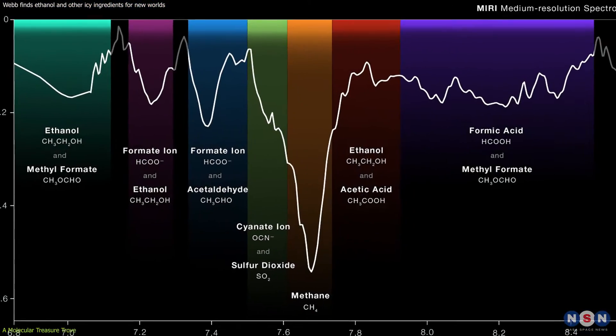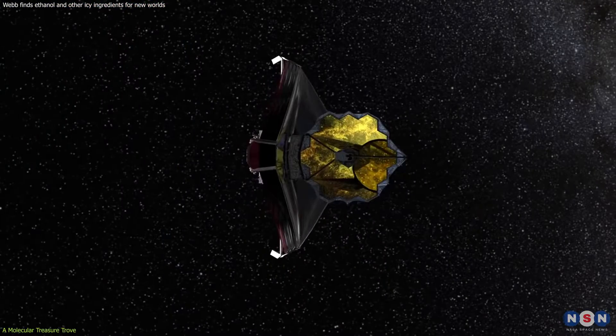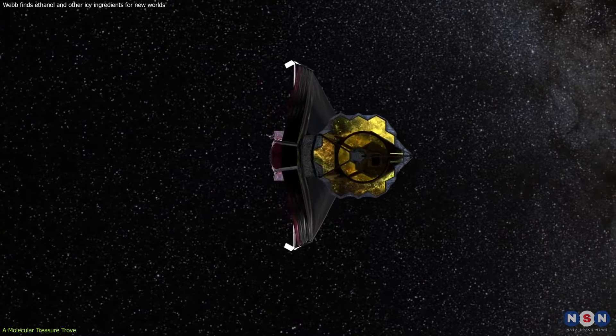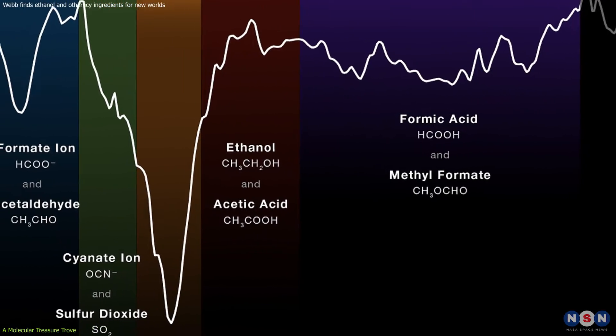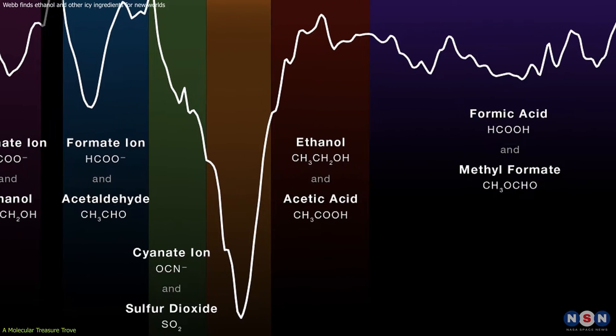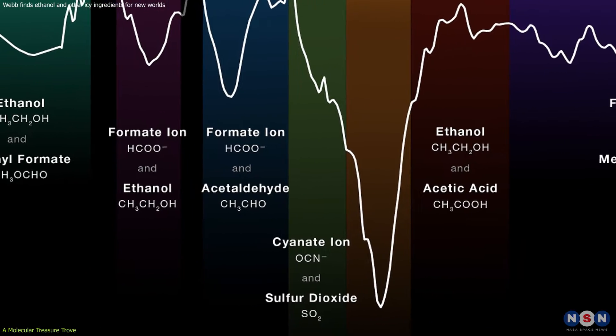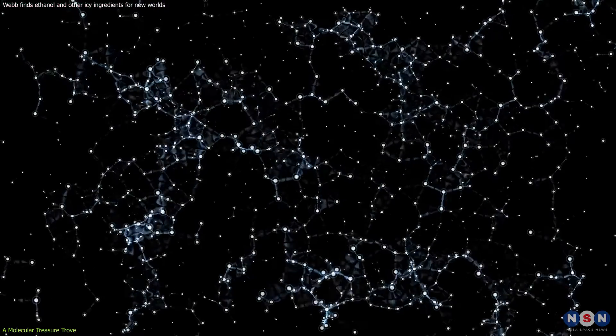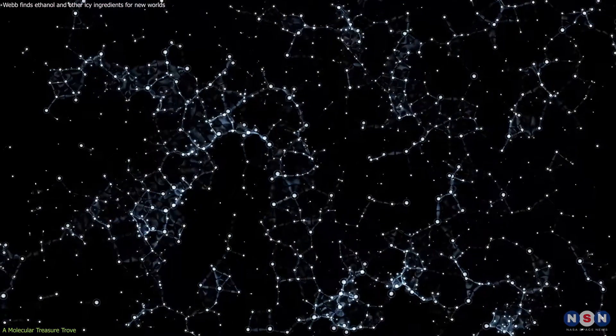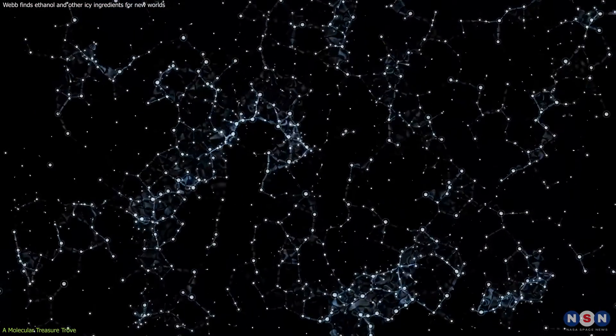Furthermore, the diversity of molecules found by the James Webb Space Telescope is astonishing. In addition to ethanol and acetic acid, other compounds like methanol, formaldehyde, and formic acid have been detected. Each of these molecules plays a unique role in the chemical evolution of the universe and the potential for the emergence of life.